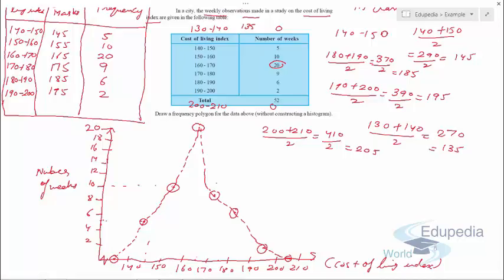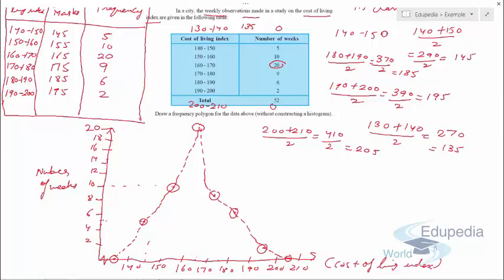Frequency polygons are always used for continuous and very large data. They are very helpful for comparing two data sets — if we have another data set, we can draw another frequency polygon on the same graph using a different color and then compare the shapes and areas. Thank you for watching this video on edupediaworld.com. Keep watching further videos and have a nice day ahead.